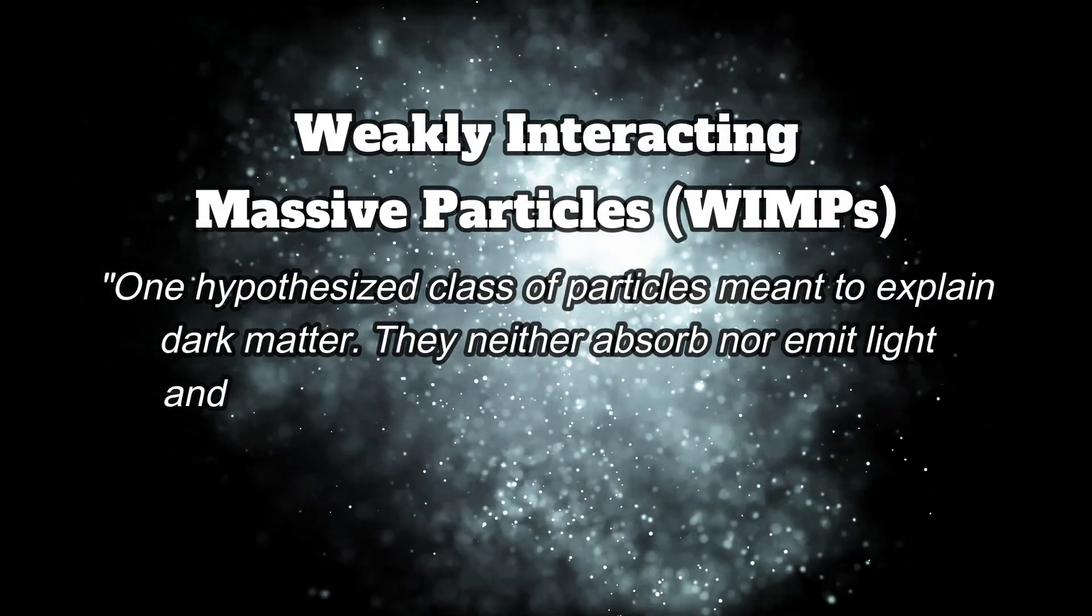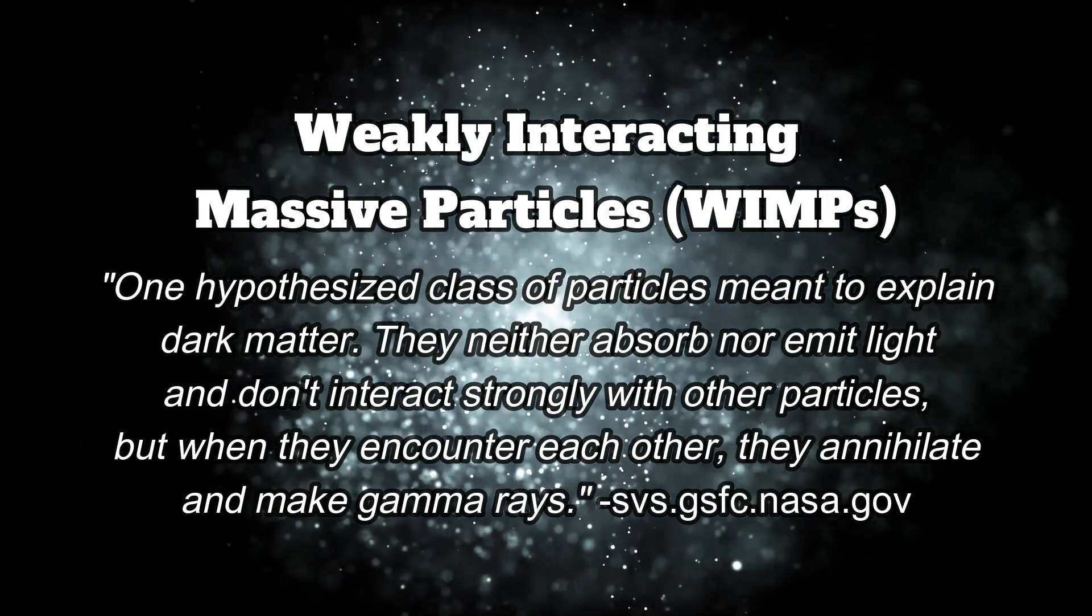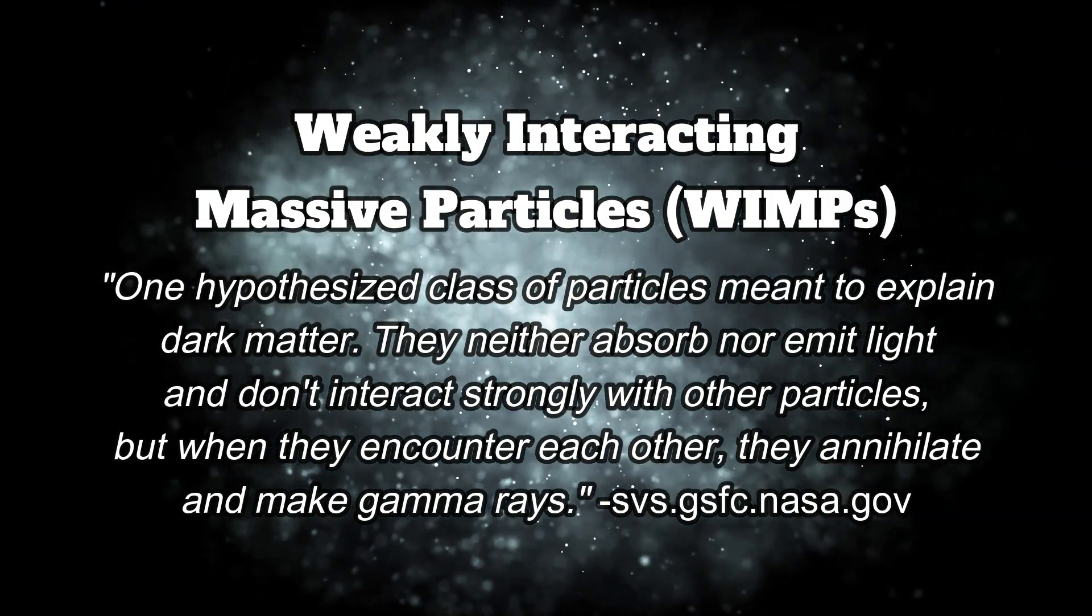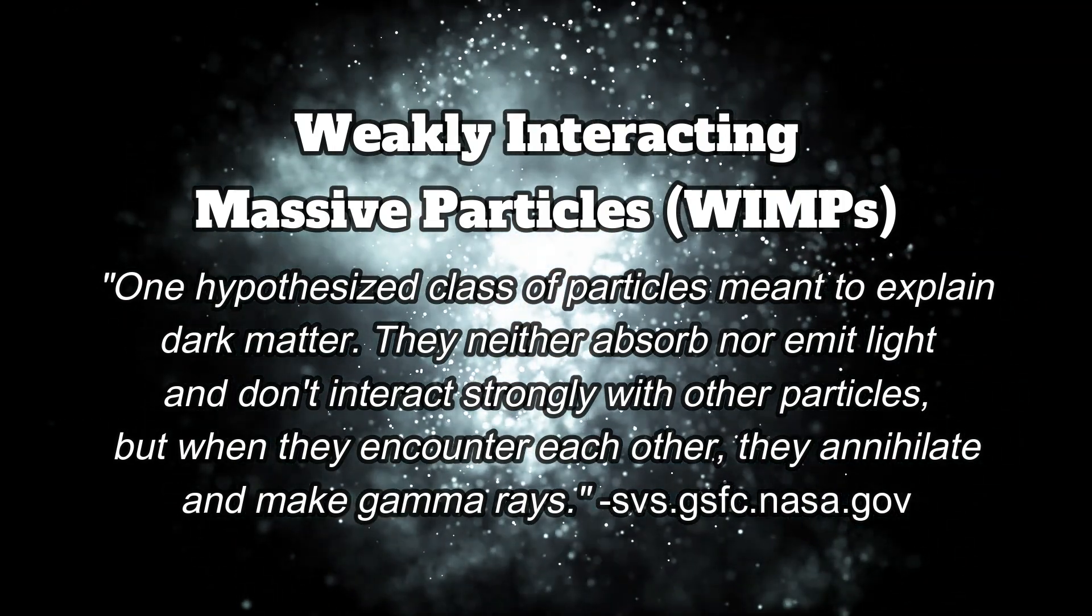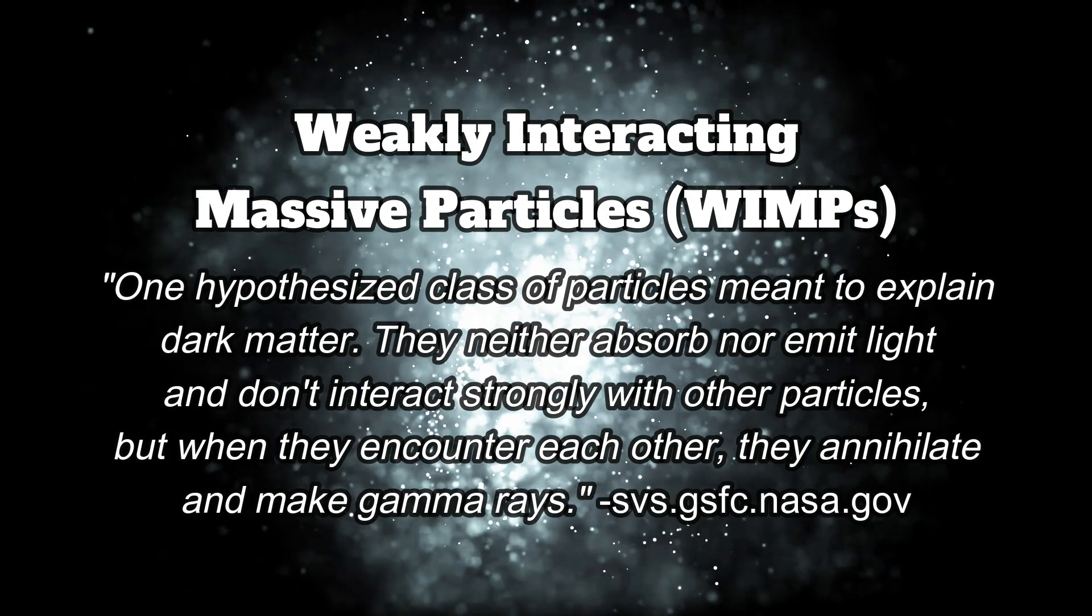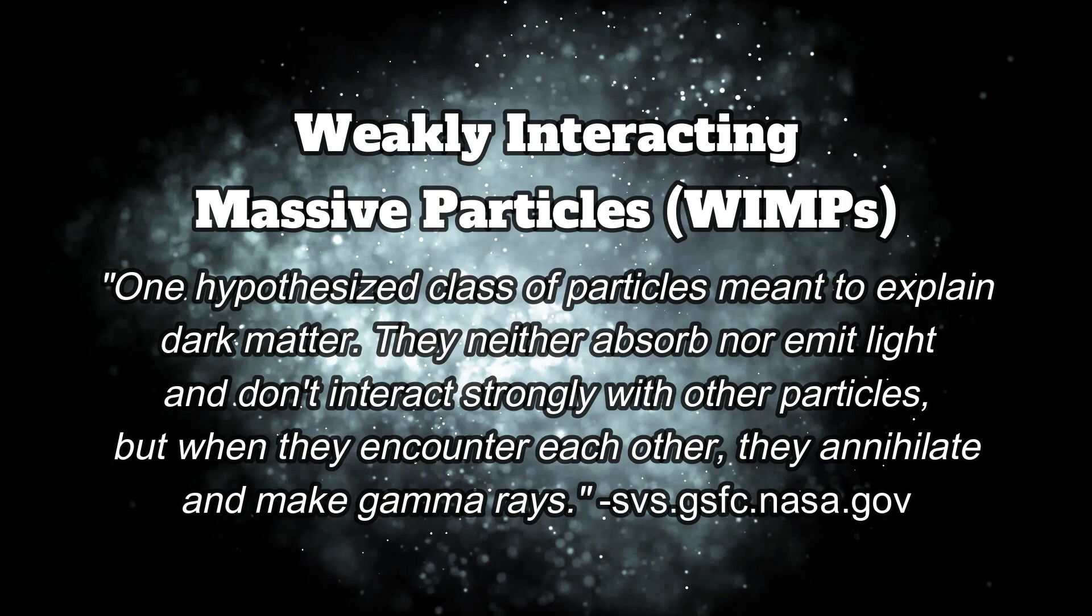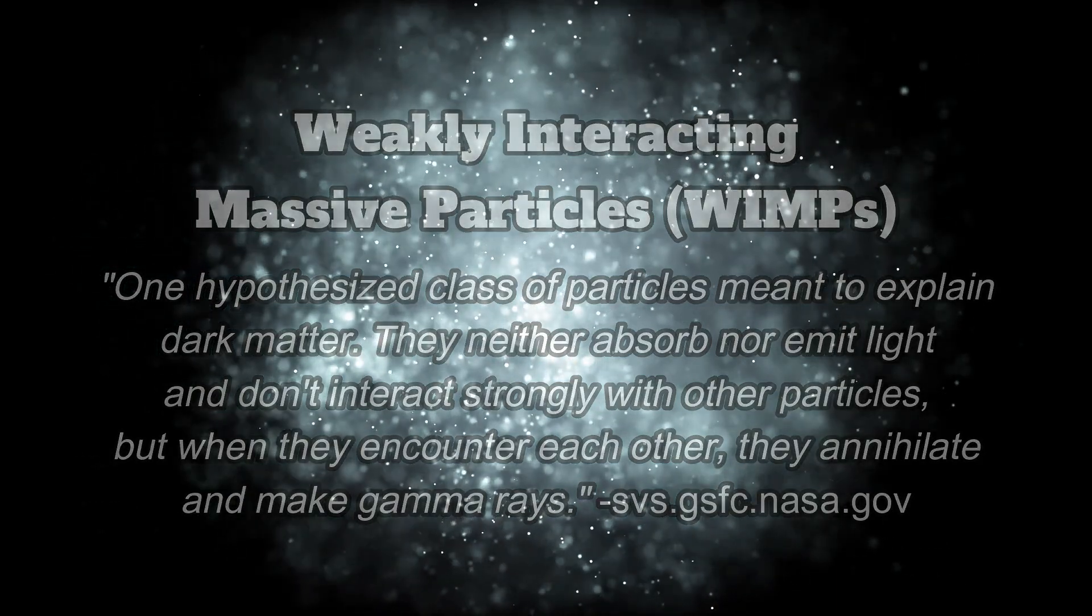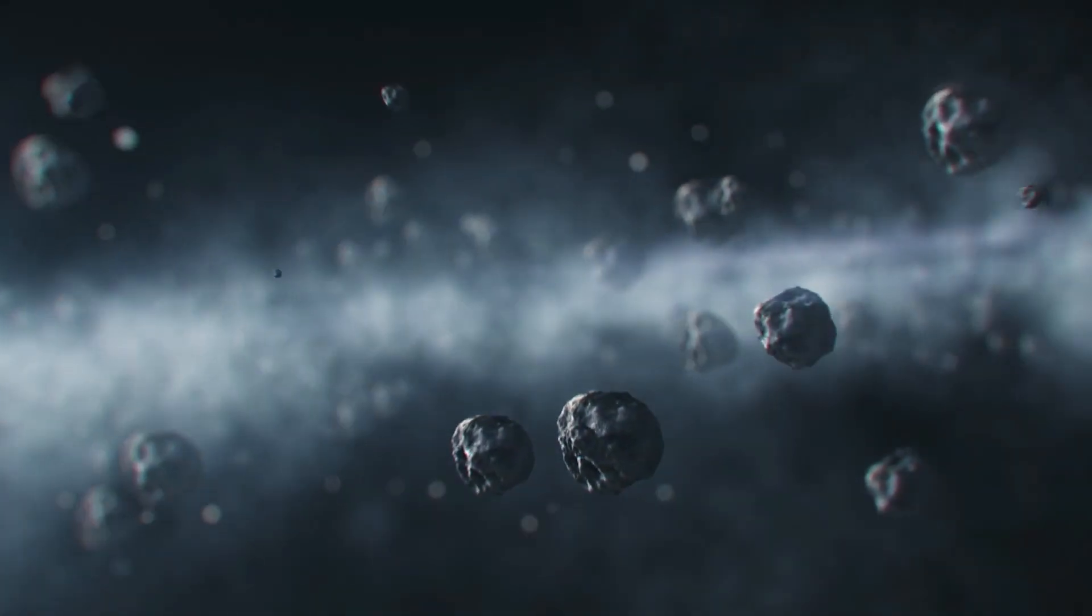Our most likely candidates for what we think dark matter is are called weakly interacting massive particles, or WIMPs for short. A hypothetical class of particles involving supersymmetry that are thought to neither absorb nor emit light. They're also thought to not interact much with other particles. However, when they encounter each other, they are hypothesized to annihilate each other and create gamma rays. These particles could be anywhere from one to one thousand times more massive than a proton.